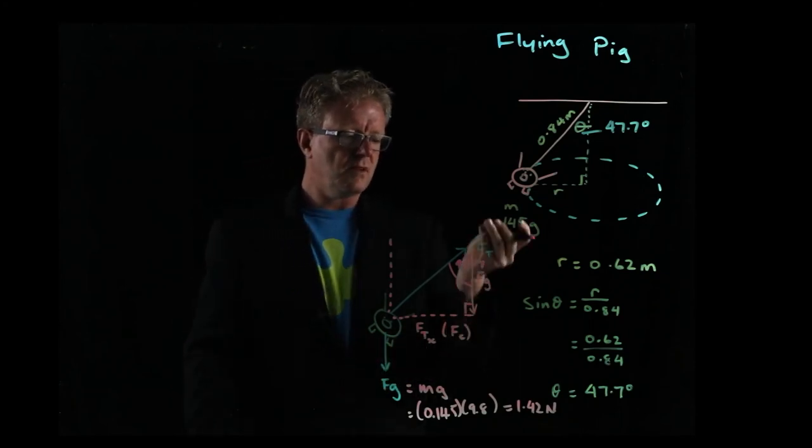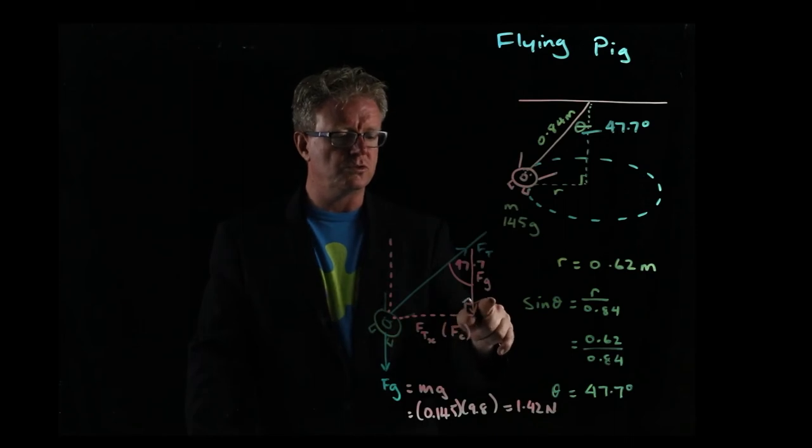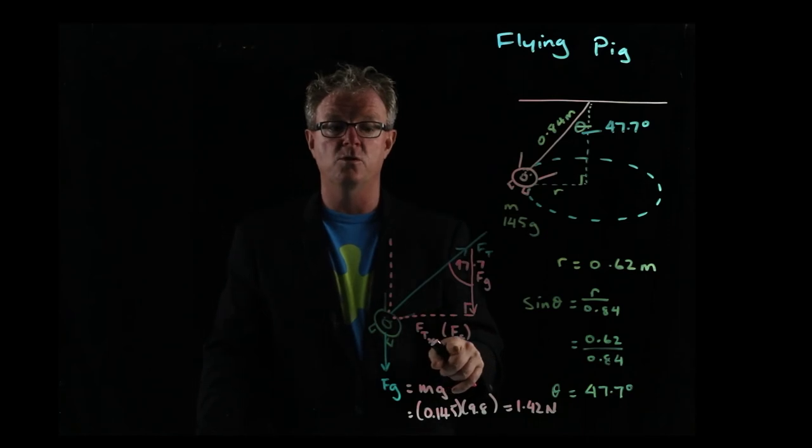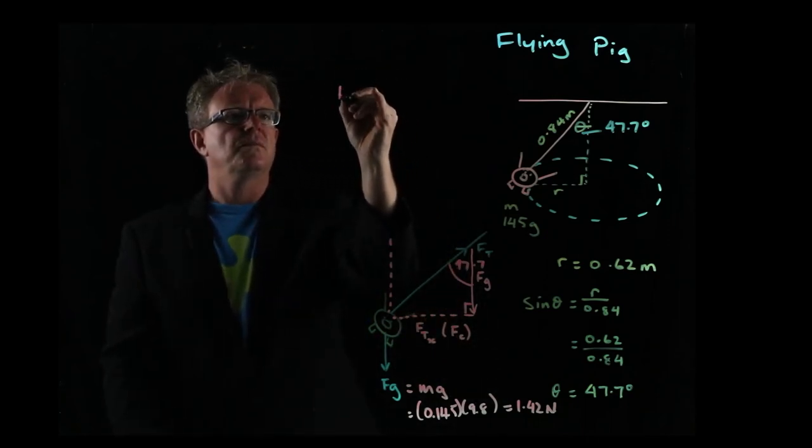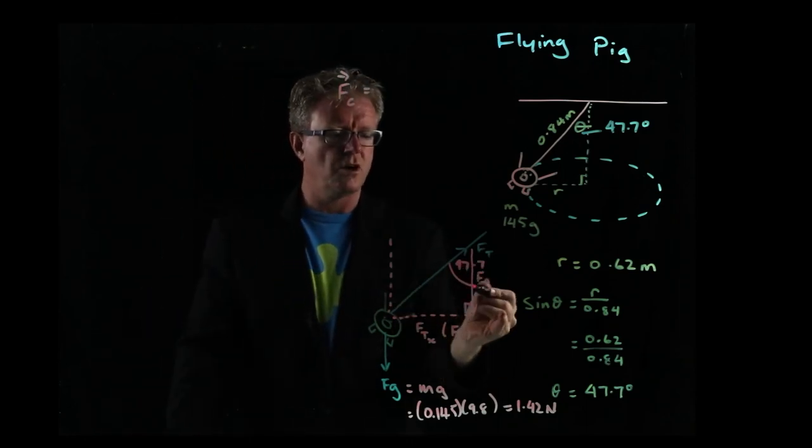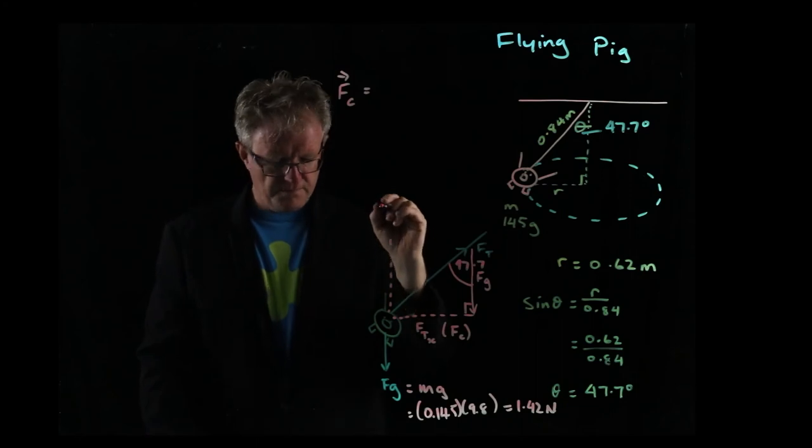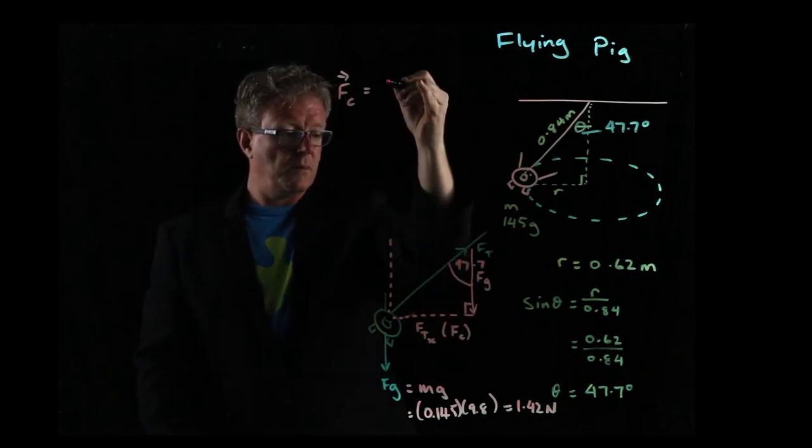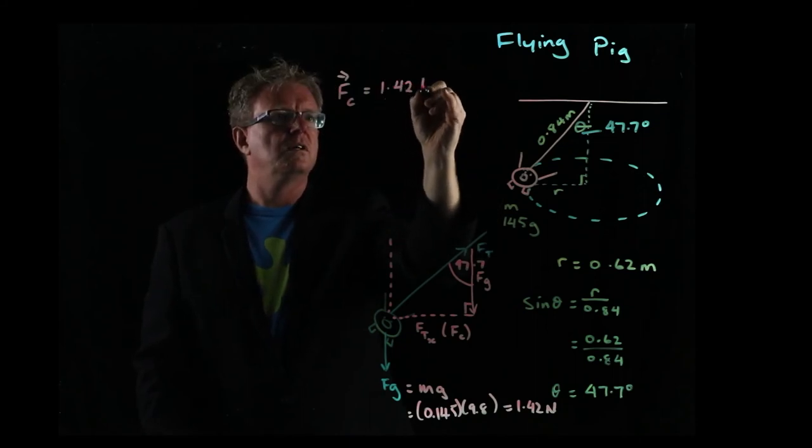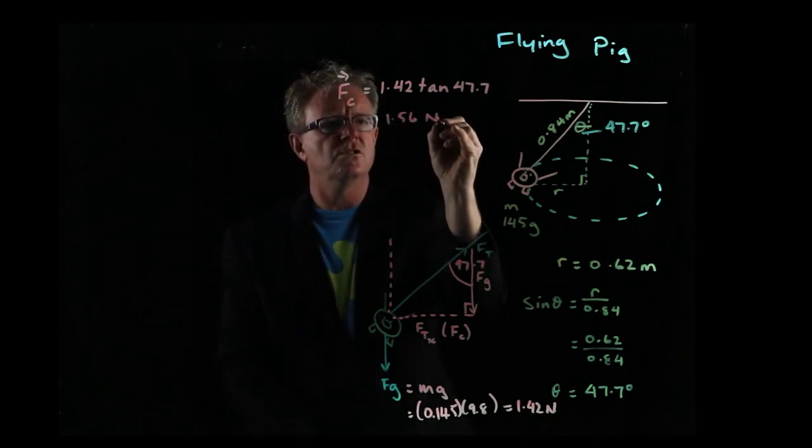The force acting on the pig due to gravity is 1.42 newtons. Now we can find the centripetal force. That's opposite over adjacent, which is tan. So the centripetal force equals 1.42 tan 47.7, which is 1.56 newtons.